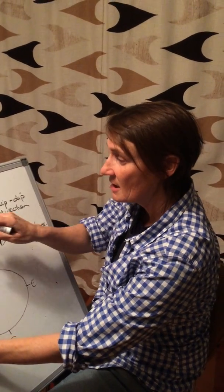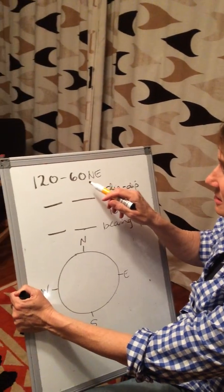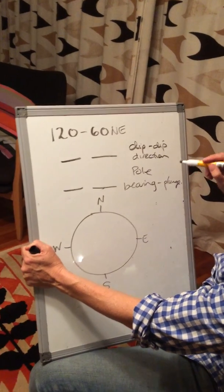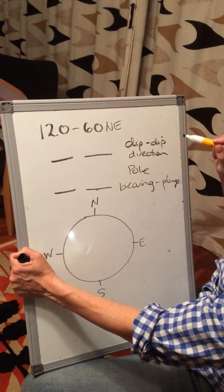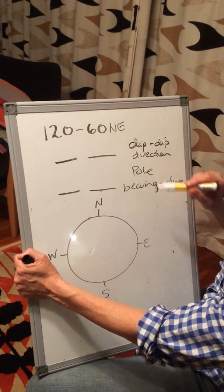I promised this video, here it is. You've got a strike, a dip, and a dip direction, and you want to change it into a dip and dip direction measurement, and the measurement of the pole.